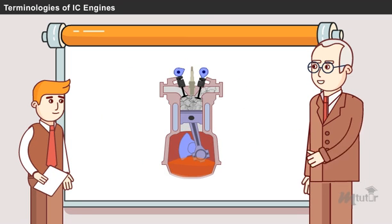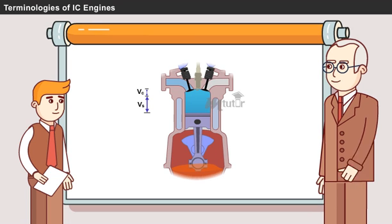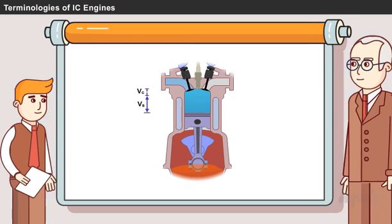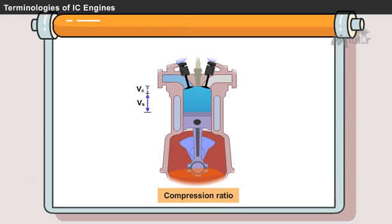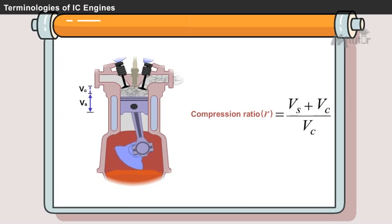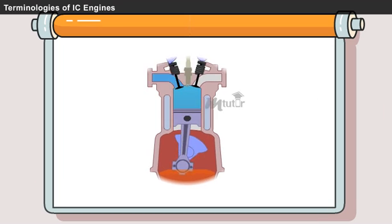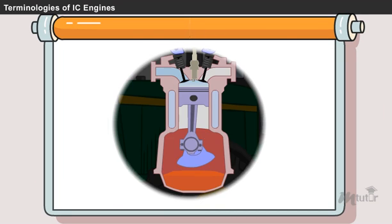These you have just learned are based on the working features of the IC engine. Now, I will explain to you the terminologies based on the performance parameters. We will start with compression ratio. It is the ratio of total cylinder volume to clearance volume.